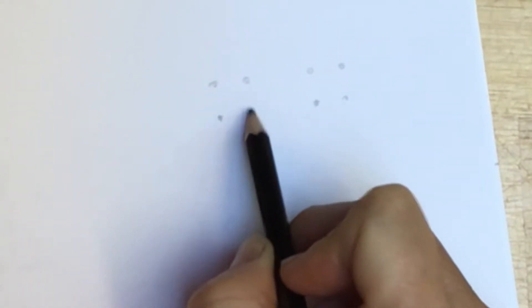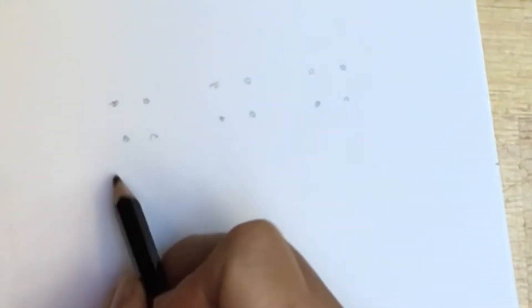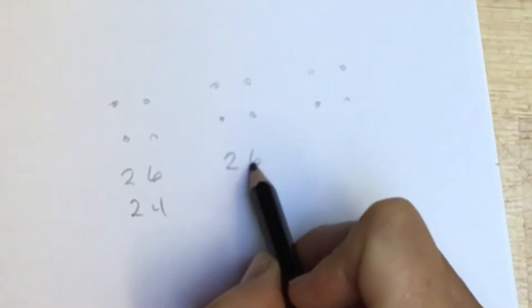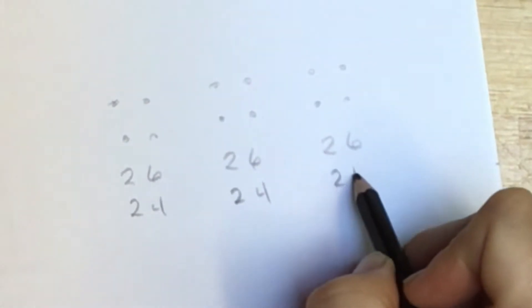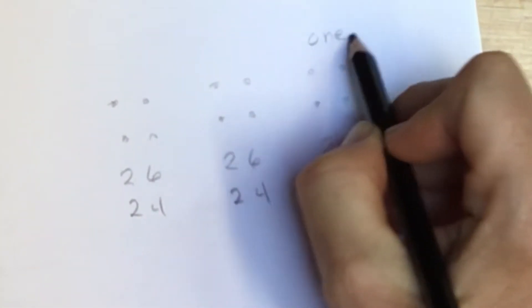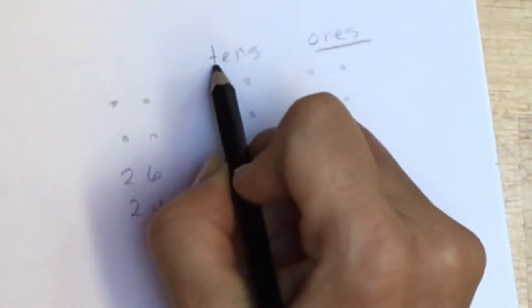They often use a series of dots to show what is happening. These dots represent the digits and the values of those numbers, so this would be 26 and 24. This is going to give us our ones place, this is going to give us our tens place, and this is going to be our hundreds place.